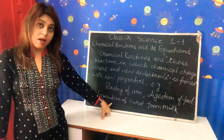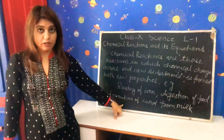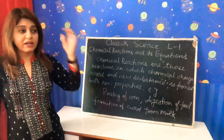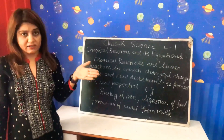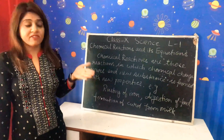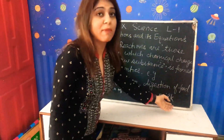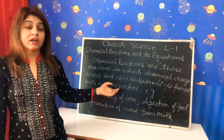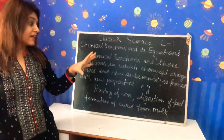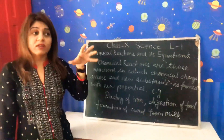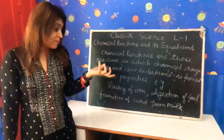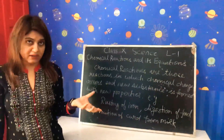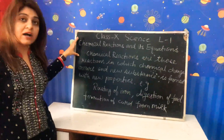Another example is the formation of curd from milk — that is also an example of a chemical reaction. All these chemical reactions are irreversible reactions, meaning we are not able to reverse them. For instance, if you have made curd from milk, you cannot reverse that reaction. So the important things about chemical reactions are: chemical changes occur, new properties appear, new substances are formed, and you cannot reverse the reaction back. They are irreversible reactions, and so they are known as chemical reactions.